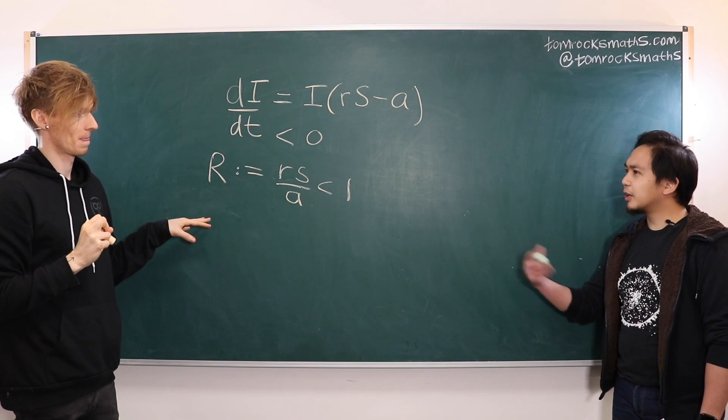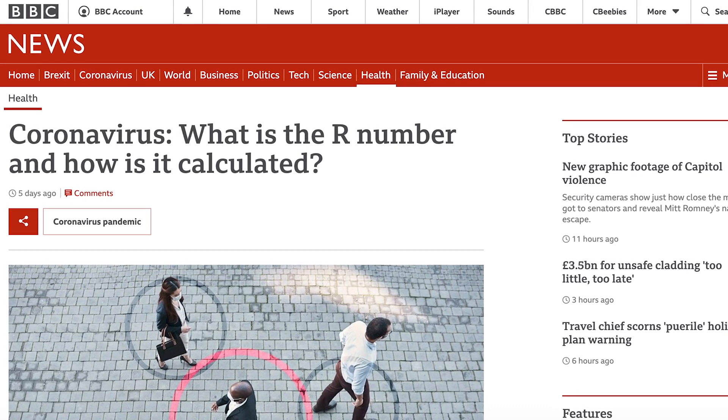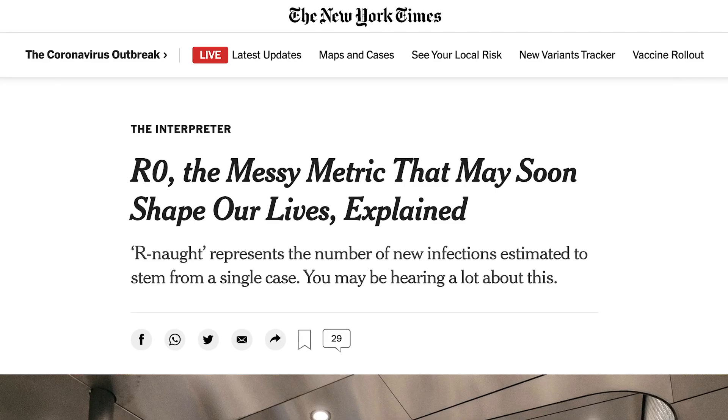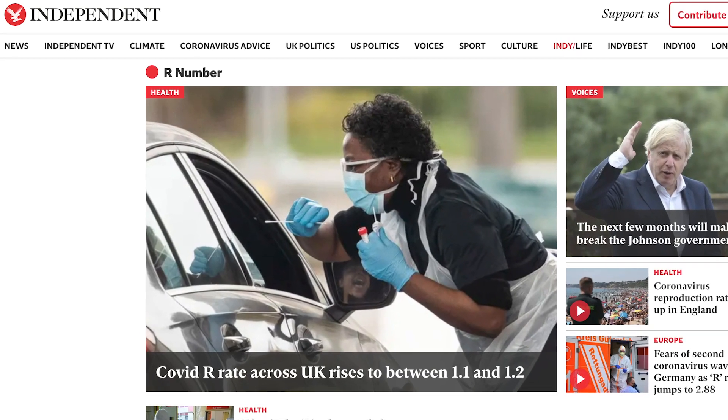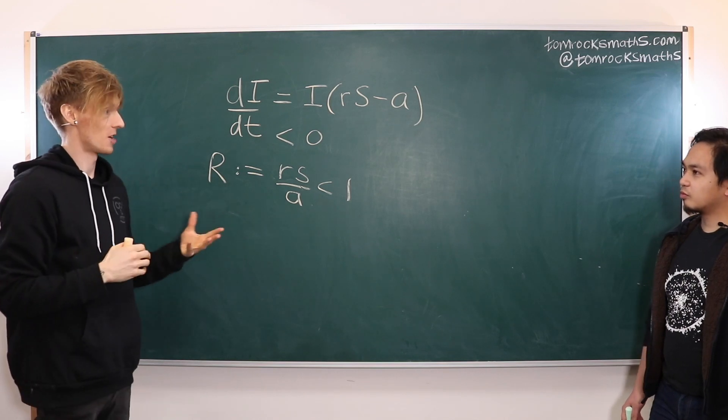So this is the R number that we're always hearing about on the news? Exactly yes, so this is why it's talked about in the news for R to be less than one for the pandemic to stop and the disease spread to stop.